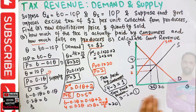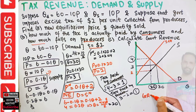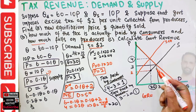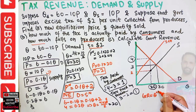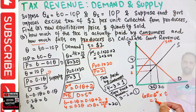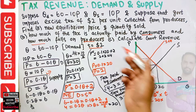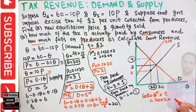The third part: government revenue equals the quantity transacted at the new equilibrium multiplied by the tax rate. That is 20 units times two dollars per unit, giving a government revenue of 40 dollars. I hope I made myself clear in this video — thank you.